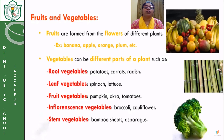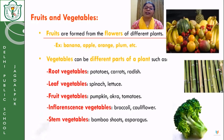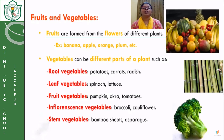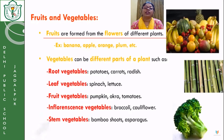Fruits are formed from the flowers of plants. When a plant grows, it develops flowers on its body. In fruit-bearing plants, those flowers get converted into fruits. Fruits are always formed from the flowers of the plant — they are not formed on different parts of the plant. For example: banana, apple, orange, plum, etc.